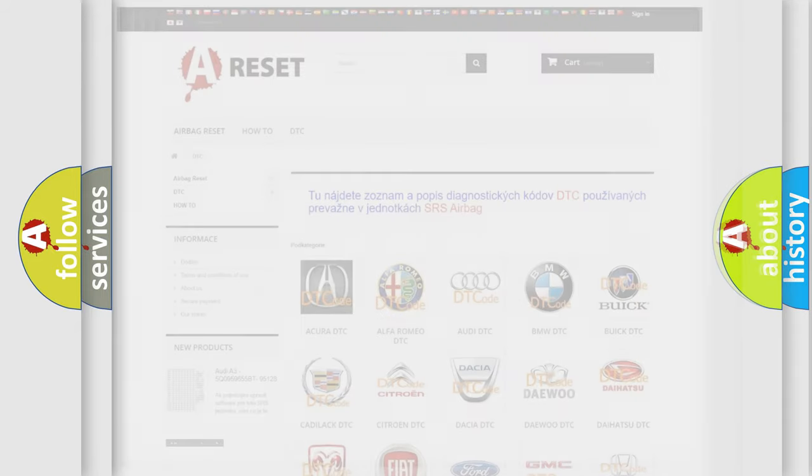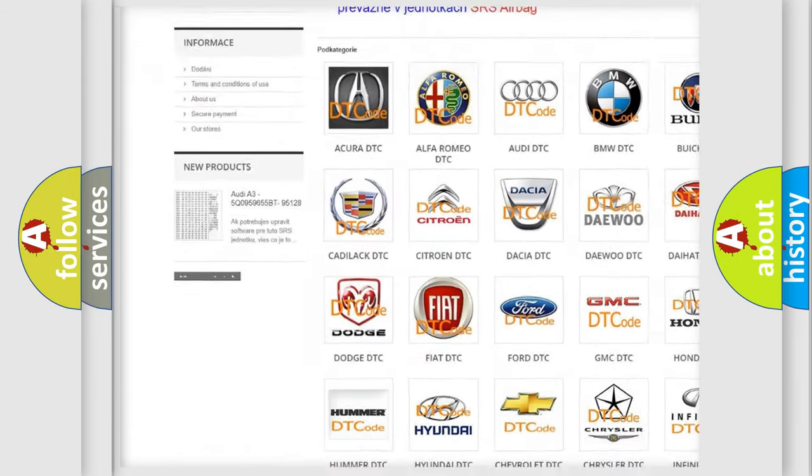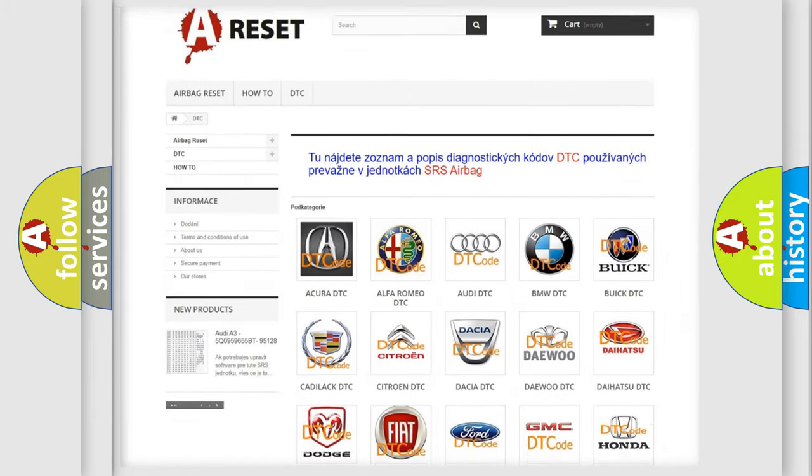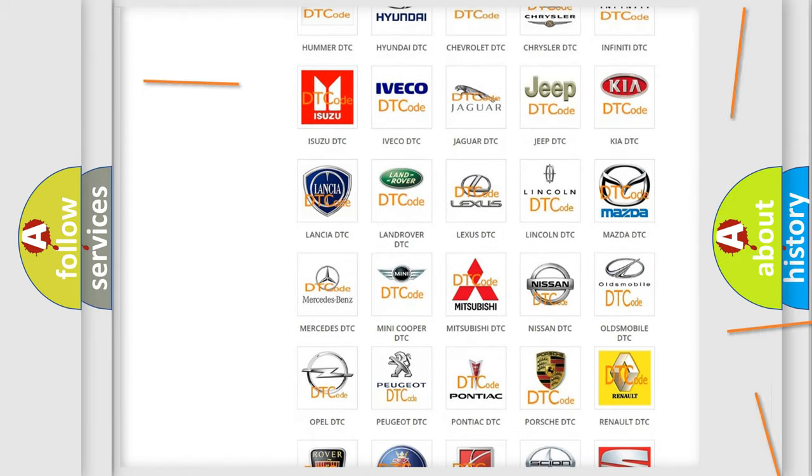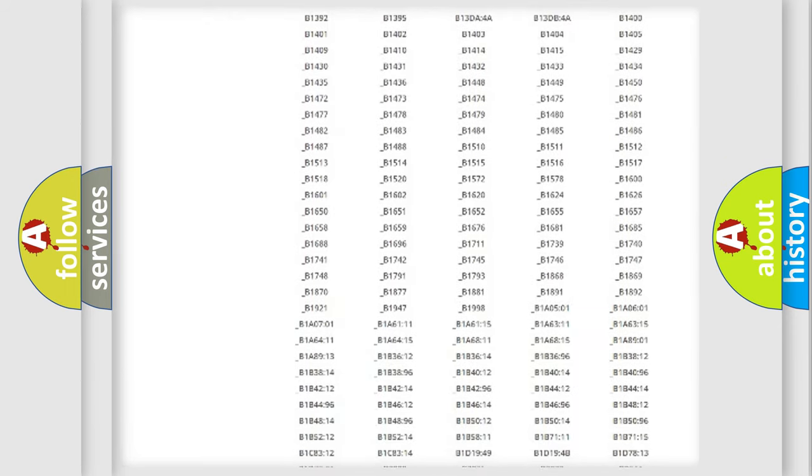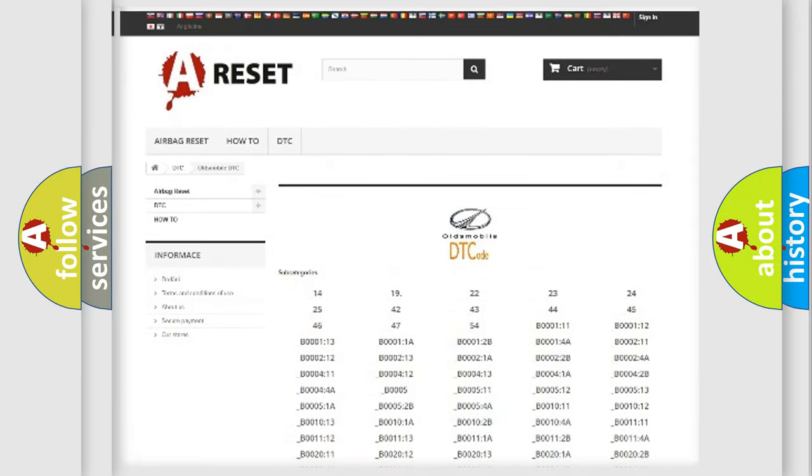Our website airbagreset.sk produces useful videos for you. You do not have to go through the OBD-II protocol anymore to know how to troubleshoot any car breakdown. You will find all the diagnostic codes that can be diagnosed in Oldsmobile vehicles.